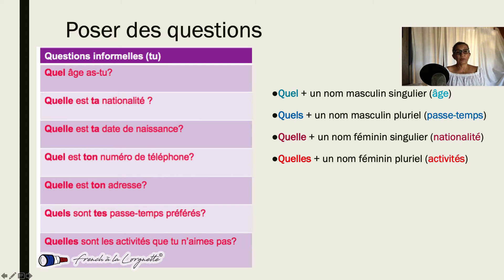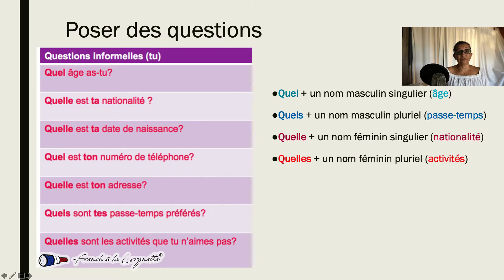Some very simple questions that you have to use every day. Quel âge as-tu? — How old are you? Quel âge: age is masculine, so we will have the masculine form. Quelle est ta nationalité? — What is your nationality?